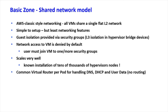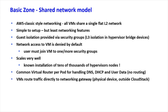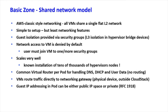With basic zone and security groups, there is a common virtual router — a single virtual router per pod — which only serves DNS and DHCP to those VMs. It is not routing at all. The VMs access their default gateway, which is a physical device outside of CloudStack directly. The virtual router is just sending DHCP and potential DNS information to those nodes.